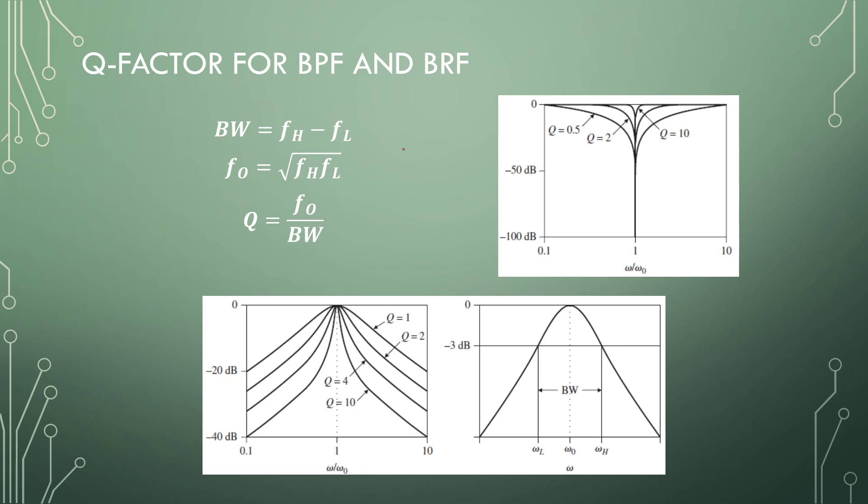We can find the bandwidth by taking the higher frequency, subtracting the lower frequency. And if we only have those two, if we multiply the two and take the root, we can find our center. And with that we can calculate our quality factor.